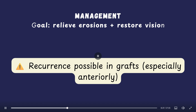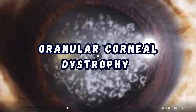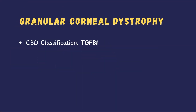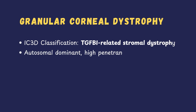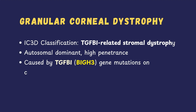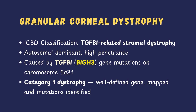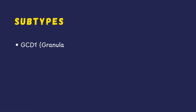The next dystrophy we'll discuss is granular corneal dystrophy. According to the IC3D classification, it is also a TGF-β1 related stromal dystrophy. It follows autosomal dominant inheritance with high penetrance and is caused by mutations in the TGF-β1 gene (Big H3) on chromosome 5. There are three main subtypes: GCD Type 1, Type 2, and Type 3.